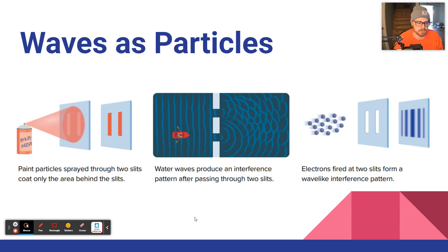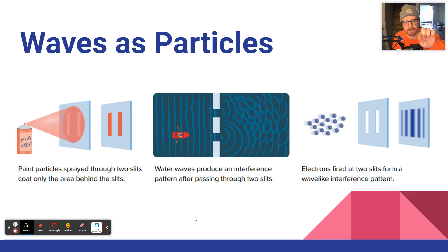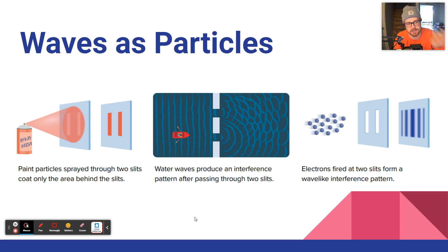So what's a particle? If paint particles are sprayed between two slits, they coat only the area behind the slits — a particle travels straight through, follows its given path, and reaches its end destination. Tiny paint particles shot from a spray can would go through two slits and replicate those two slits. But water acts like a wave, and water waves passing through two slits produce an interference pattern.